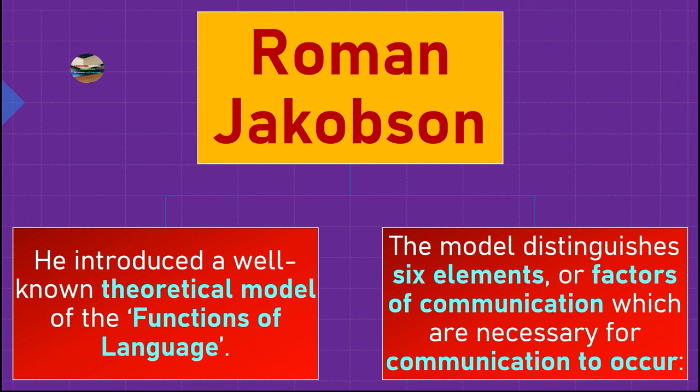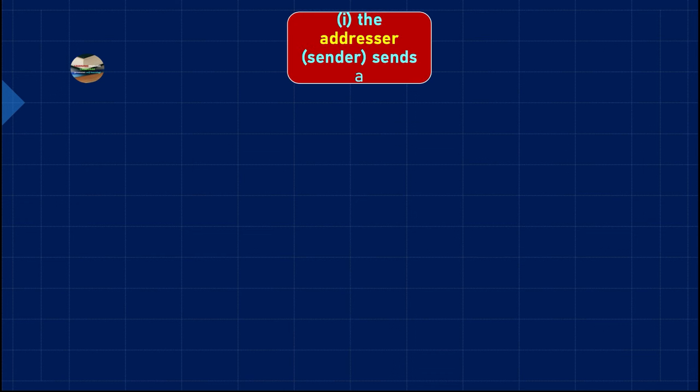These six factors are very important. Let's talk about each one through this diagram. For any communication to be successful, first we need the addresser — who is the sender. The addresser may be a speaker, or a writer who writes a poem or a book, or someone who delivers a speech.